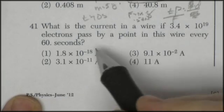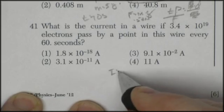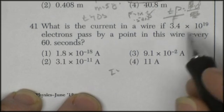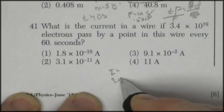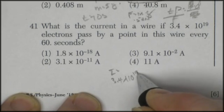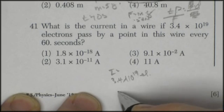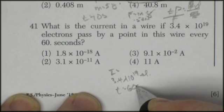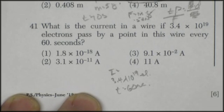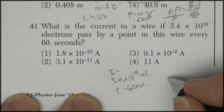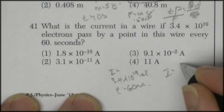41. What is the current in a wire? If 3.4 times 10 to the 19 electrons, time of equal to 60 seconds. Well, the unit of current is coulombs per second.